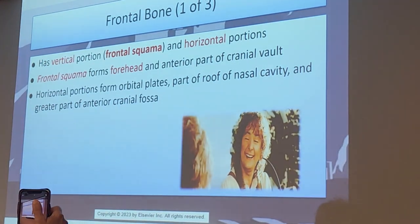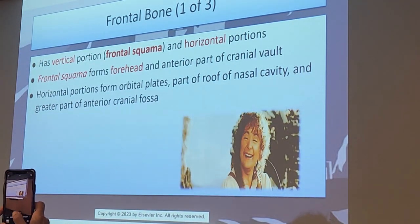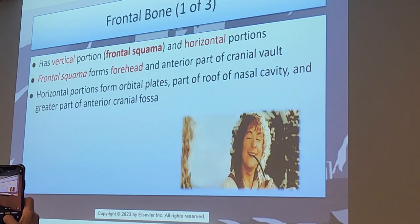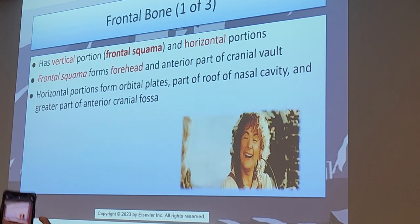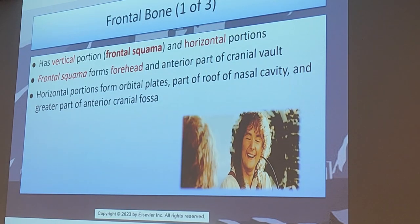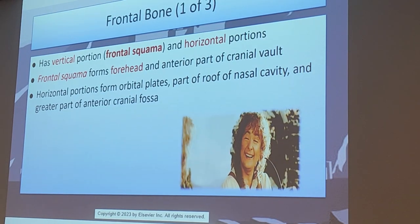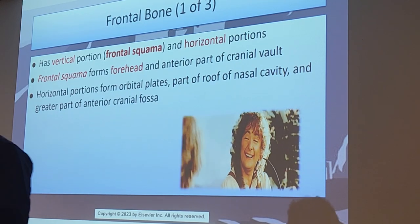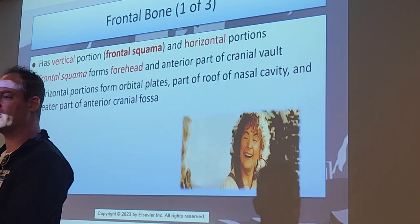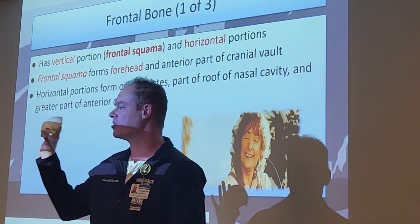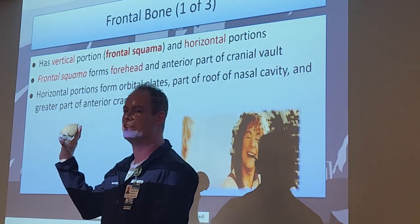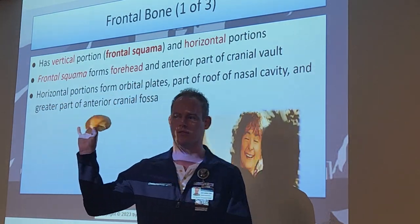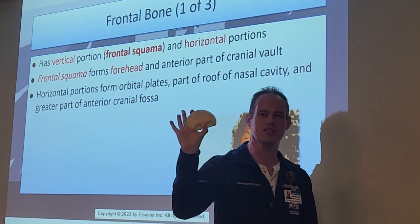It's also going to be part of the roof of the nasal cavity and a greater part of what we call the anterior cranial fossa, which is a big opening where your brain sits inside of the skull. This looks like a very simple bone, but there are quite a few landmarks we have to label on this one bone.